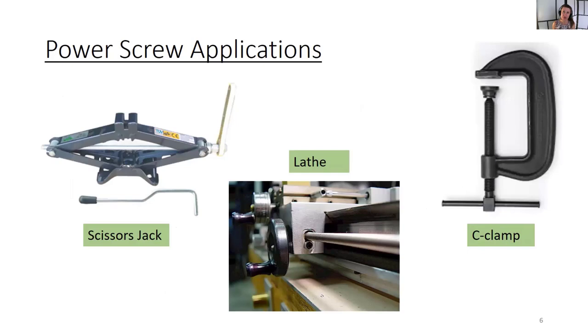Three applications include a scissors jack, which I hope you have in your car, a lathe, and a C clamp. In a scissors jack, the power screw is positioned horizontal or parallel to the ground, and applying torque to the power screw results in vertical linear motion to jack something up like your car. In a C clamp, applying torque to the handle results in linear motion of the screw, which provides clamping force.